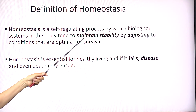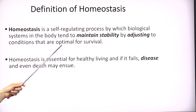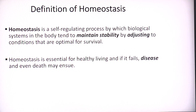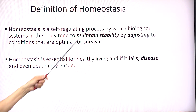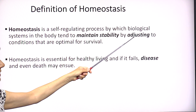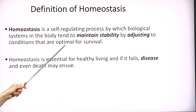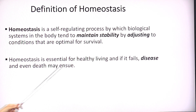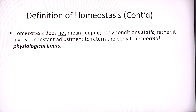Homeostasis is a self-regulating process by which biological systems in the body tend to maintain stability by adjusting to conditions that are optimal to survival. Maintaining stability means the body is always going to change — there are always external or internal variables that will change within the body, and homeostasis will help to adjust these variables back to optimal levels for survival. If this does not work, disease or even death can ensue.